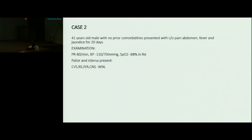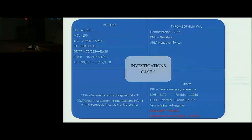Coming to case two: a 41-year-old male with no prior comorbidities presented with complaints of pain abdomen, fever, and jaundice for 20 days. On examination he had oxygen requirement and pallor and icterus were present; rest of the examinations were within normal limits. Routine investigations showed anemia with indirect hyperbilirubinemia. In conjunction with hemolytic workup we reached a conclusion of hemolytic anemia. He also had thrombocytopenia, and thrombophilia workup was sent in view of unprovoked thrombosis, but his APLA was negative twice.